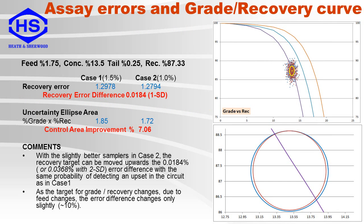Here are shown two charts. The top one shows the grade recovery curves. The yellow spot in the middle is the analyzer's measurement result and the yellow ellipse around it is the one standard deviation error. The additional red and blue points are errors from a Monte Carlo simulation. The bottom chart is a close-up of the two one standard deviation error ellipses comparing sampling precision errors of one and a half and one percent. The tops of the ellipses have been aligned. The idea is that the recovery target can be moved upwards by 0.0184 percent, and the probability of detecting when the process exceeds the one standard deviation point will be the same in both cases while improving the recovery. As the target grade or recovery changes due to feed changes, this error difference also changes, but only slightly.